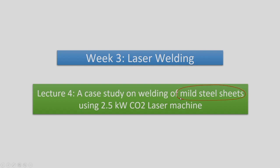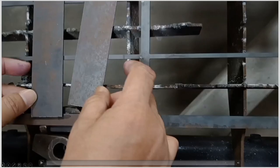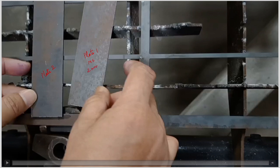We will be joining two mild steel sheets using a 2.5 kilowatt laser machine — the same machine used for machining operations. On your screen you can see two plates: plate 1 and plate 2, both mild steel with a thickness of 2 mm. Let us begin our video.